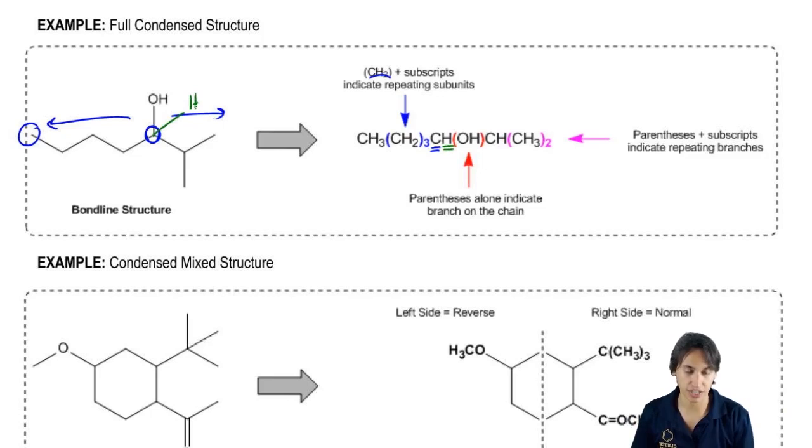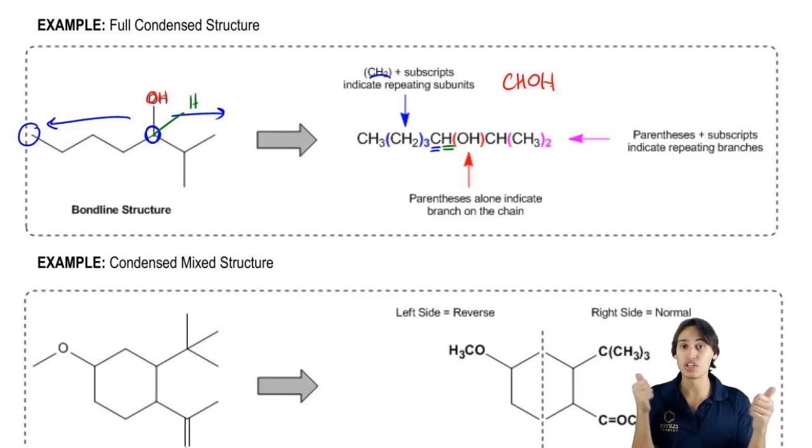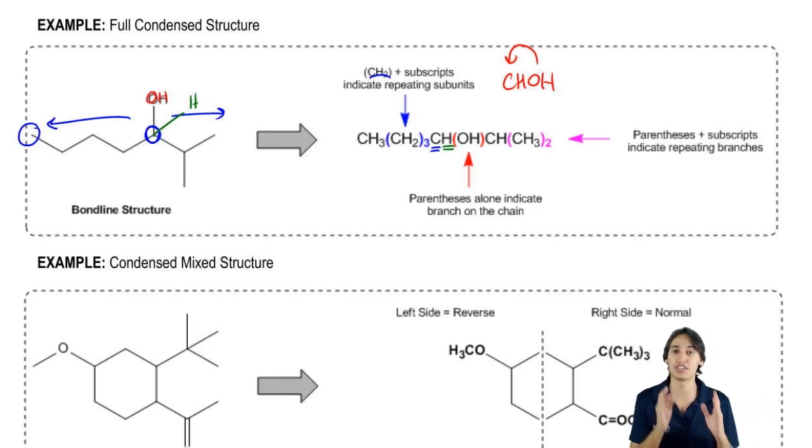That means that I have one H sticking off there and I also have an OH. Now notice that in this case I was nice and I put it in parentheses. What that meant was that it's very easy to say, oh, the OH is the thing that's coming off here. Done. I have my four bonds. Perfect. But sometimes you might see it as just CHOH. And then what you would need to know is that, okay, one of them, the H is going in one direction, the OH is going in the other, but you know that both of them are attached to that carbon because remember that that carbon needs four bonds. So that's kind of the way that we think about it. You always think in terms of how can I make carbon have four bonds.